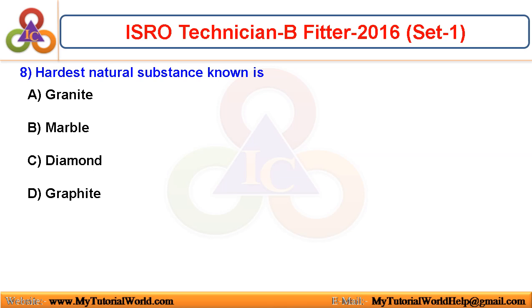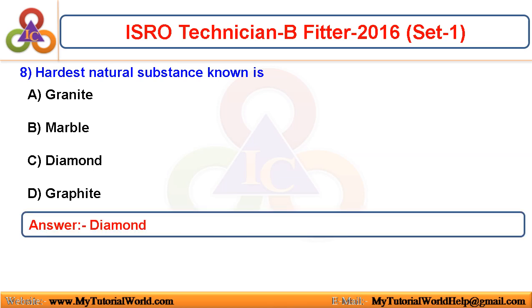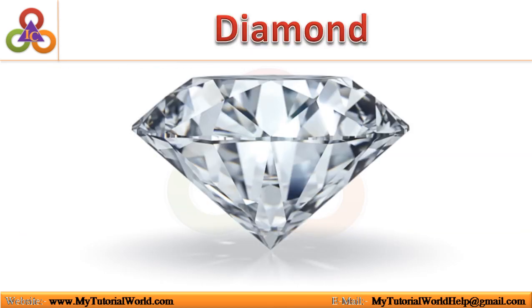Hardest natural substance known is? The hardest known natural substance is diamond. Diamond is the purest form of carbon.